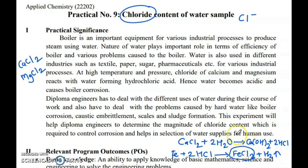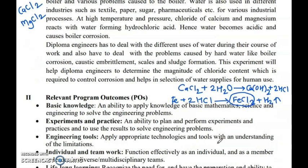HCl is going to make your boiler material weaker. When corrosion of the boiler occurs, it is very dangerous for the person working surrounding or in contact with that boiler. So for industrial purpose as well as domestic purpose, determining chloride content is necessary.